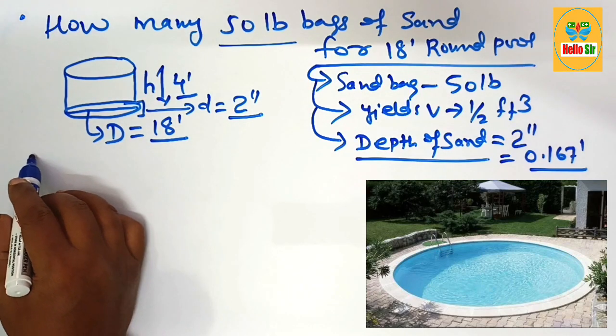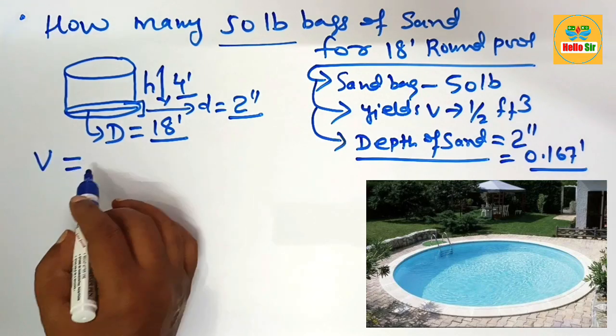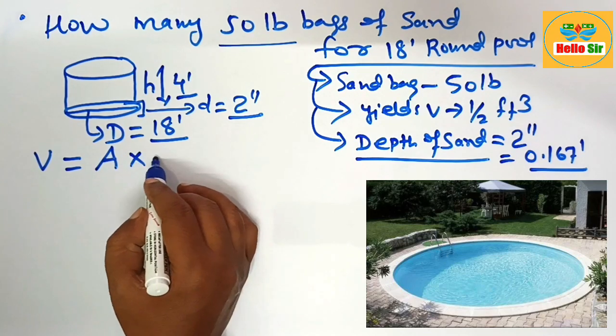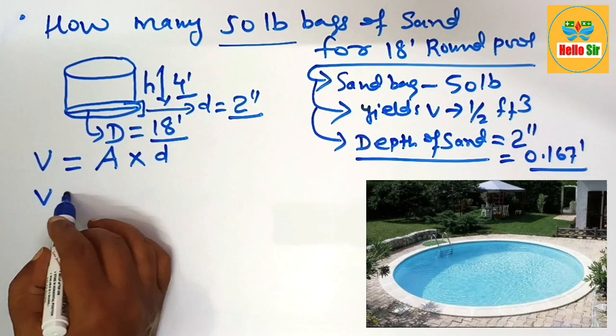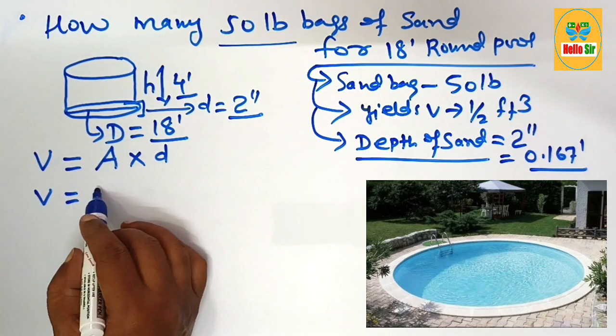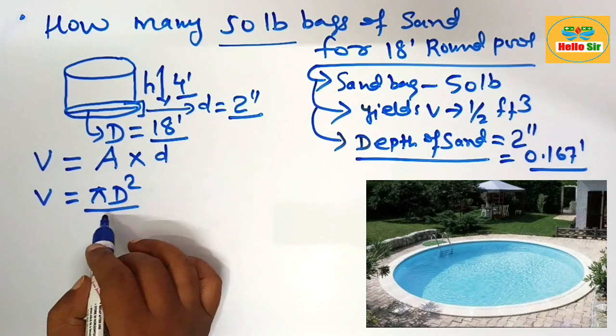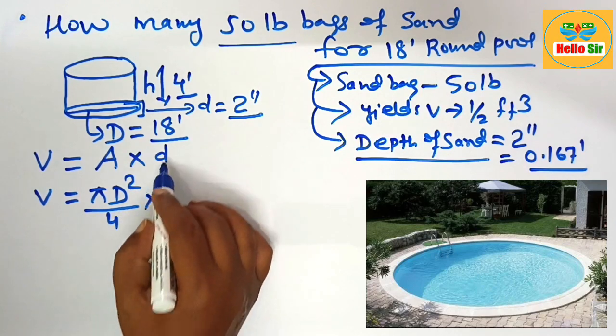First, you find the volume of sand required. The volume of sand is calculated by multiplying the area and the depth of sand. The area of a round swimming pool equals π × d² ÷ 4, multiplied by the depth of sand, which is 0.167 feet.